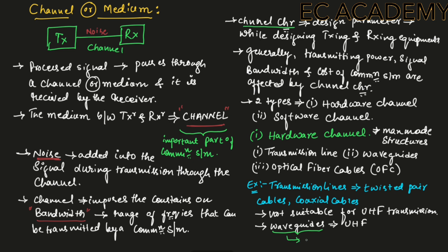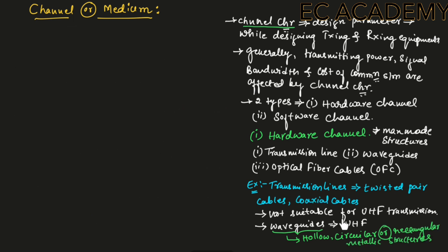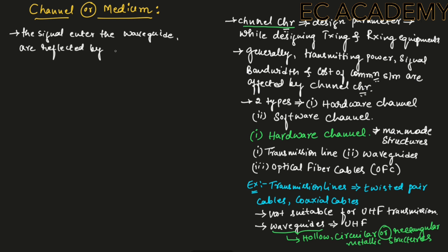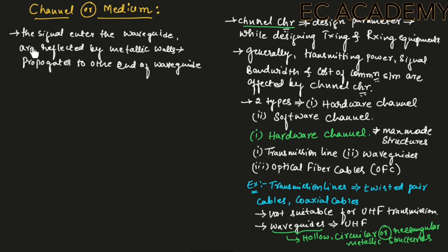Waveguides are hollow, circular, or rectangular metallic structures. The signals that enter the waveguide are reflected by the metallic walls and then propagate to the other end of the waveguide.